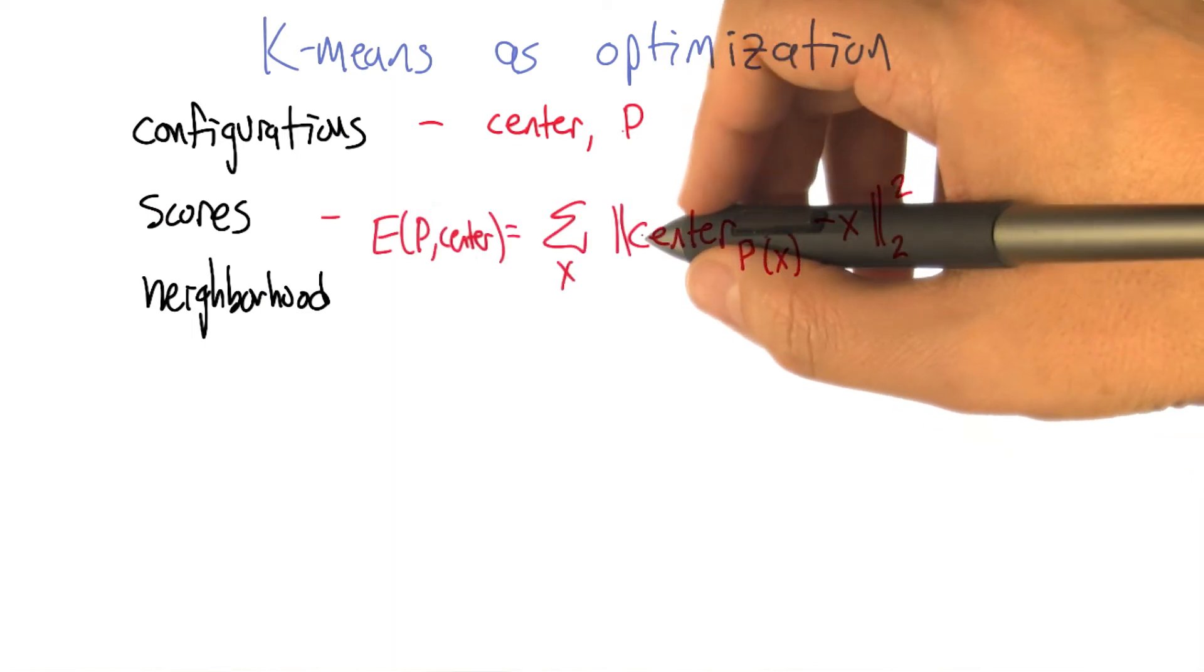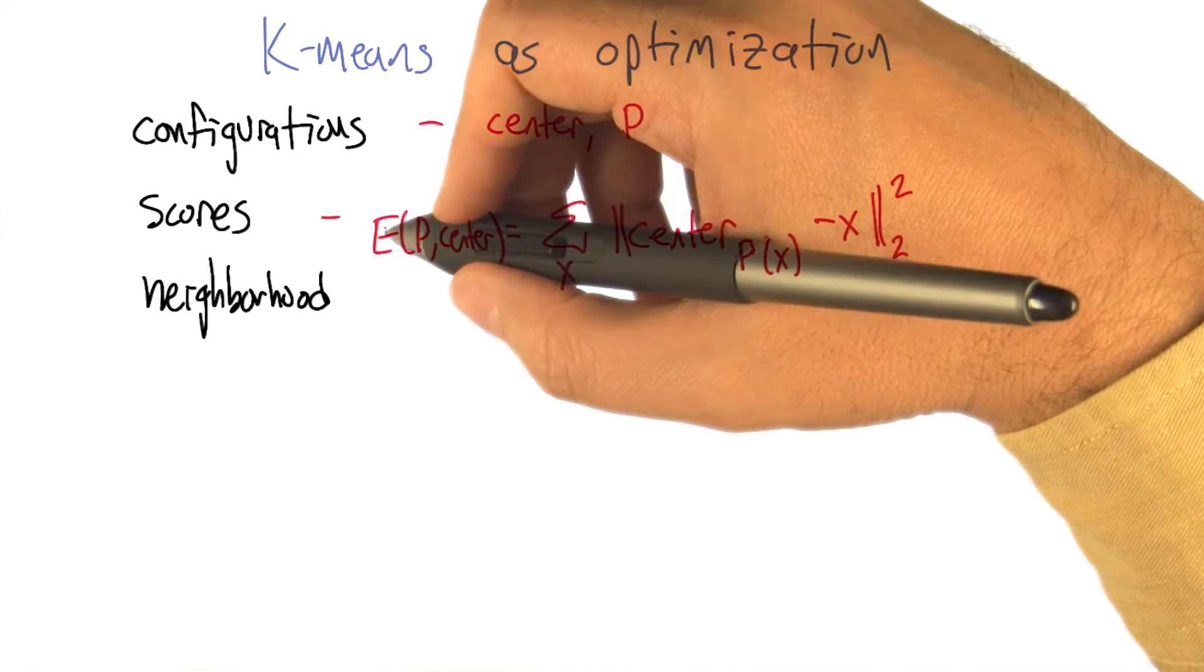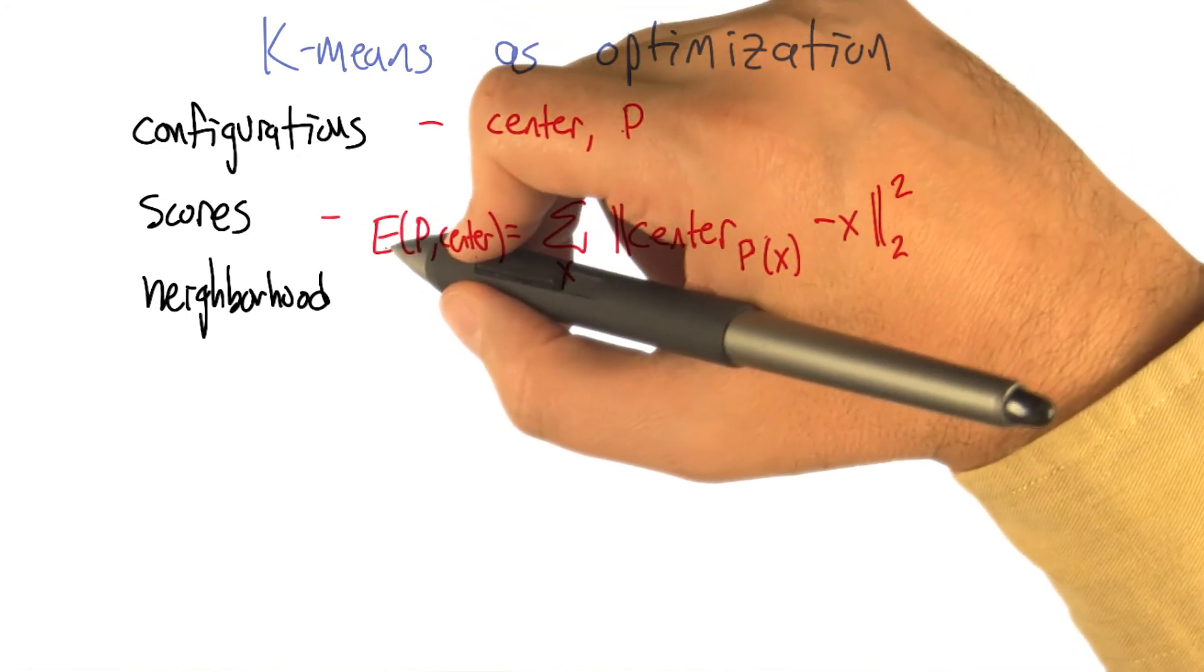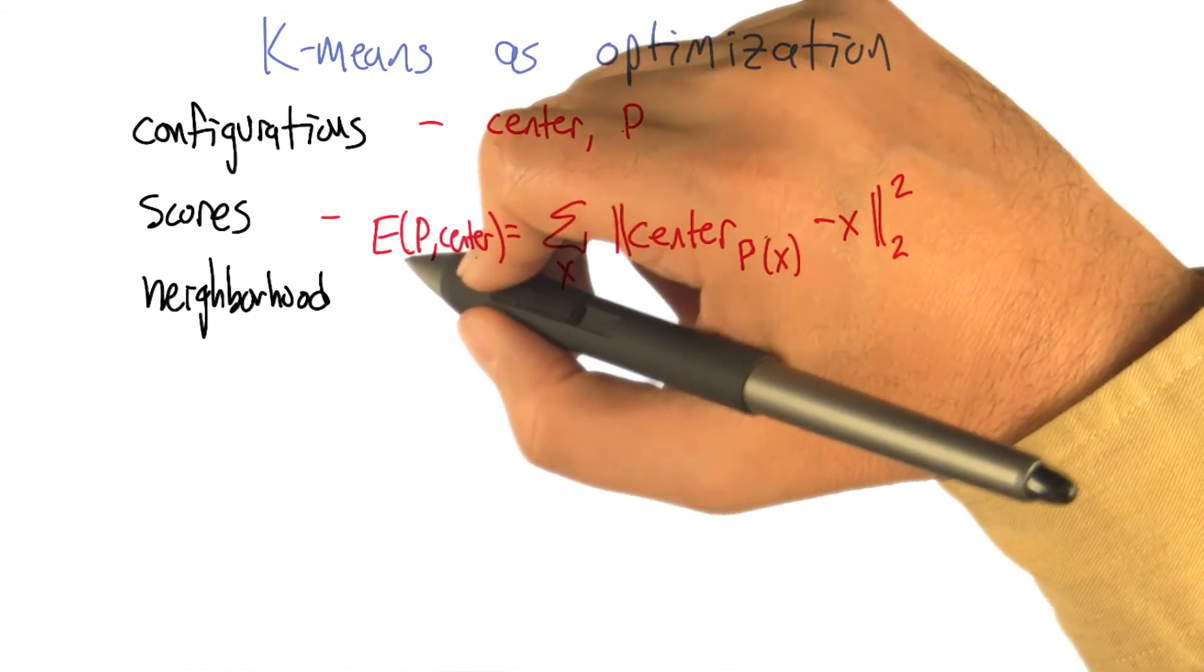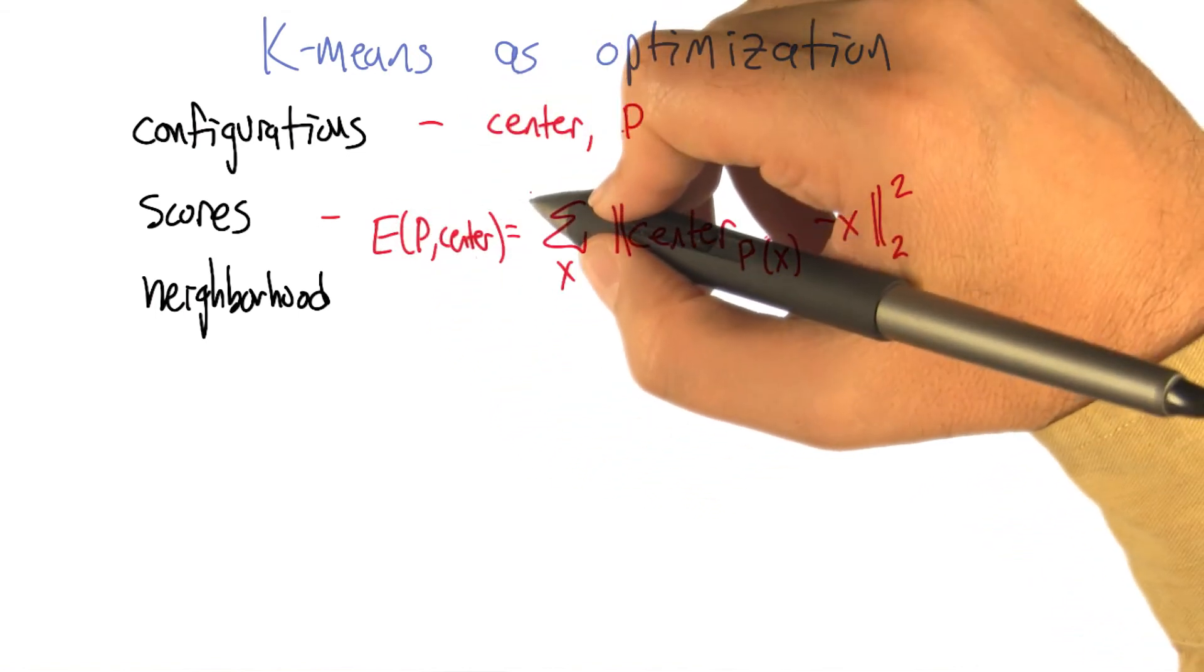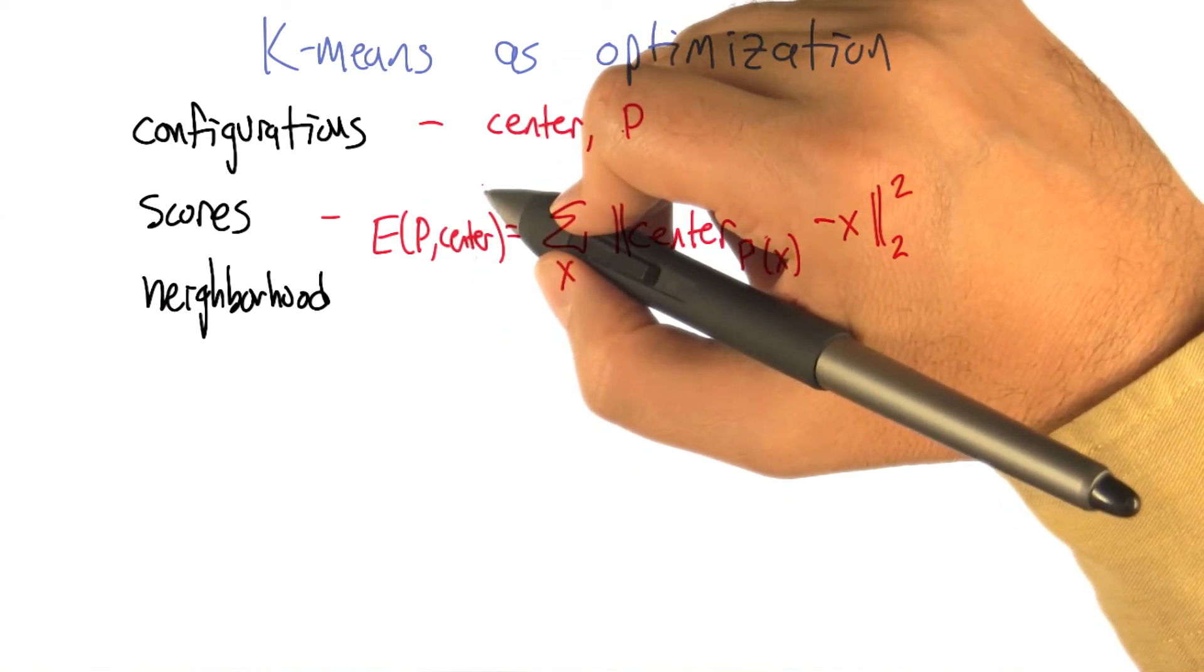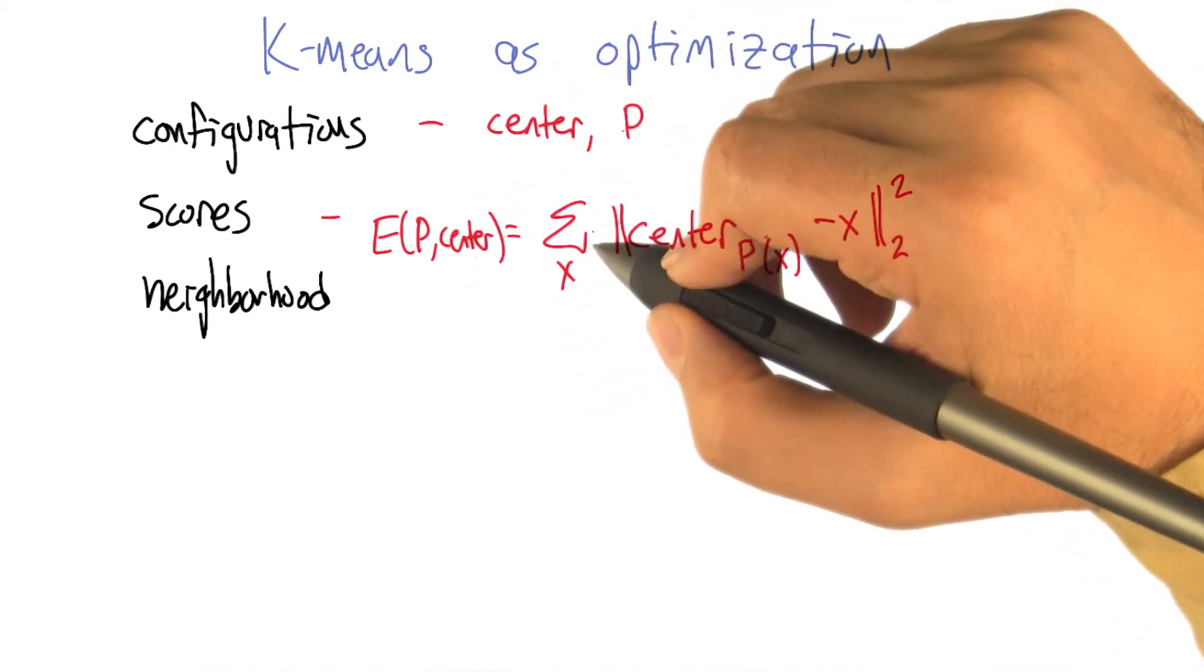Right. So here's a concrete way of writing down what we think the scoring function could be. So we're going to say that the error, it's kind of the negative score, right? This is something that we want to minimize, even though generally we've been talking about optimization as maximizing. Here's something we want to minimize. If you give me a particular way of clustering it and you define the centers based on that cluster,